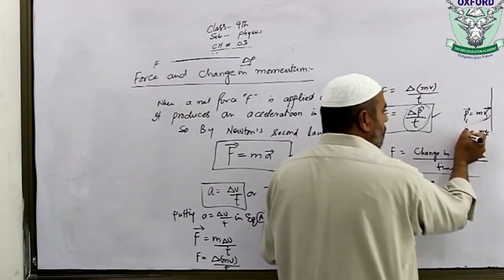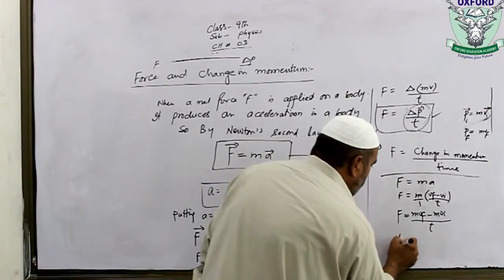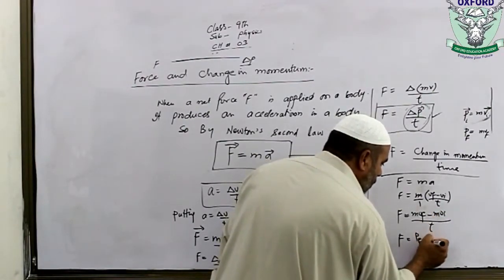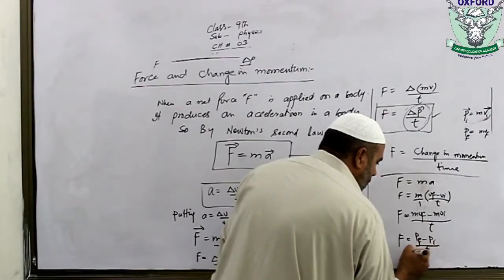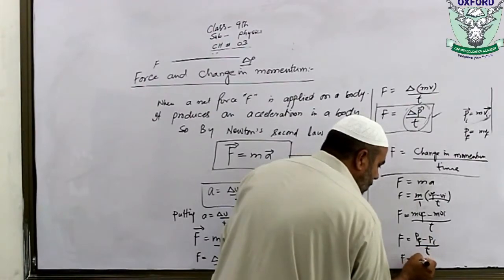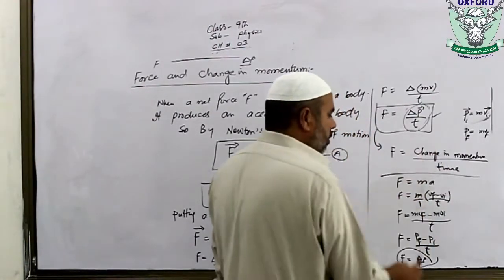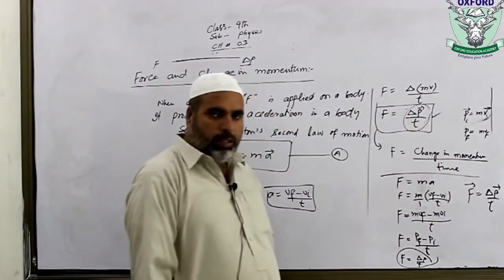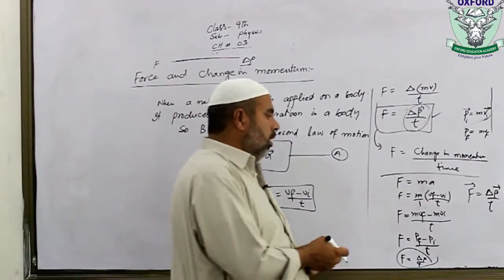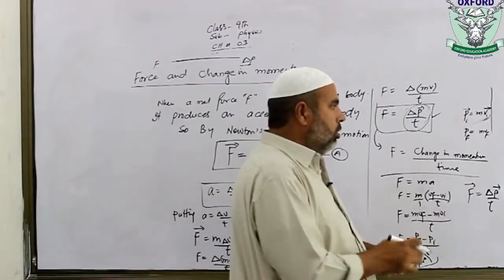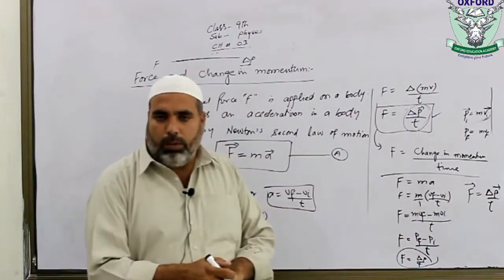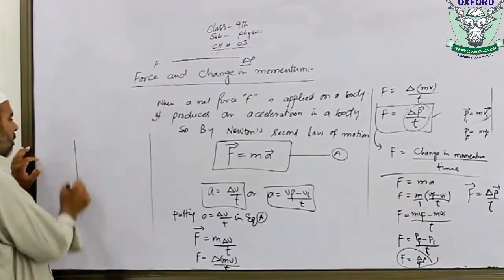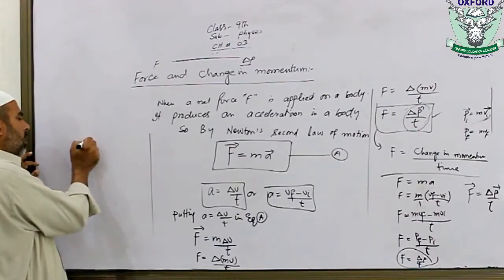The rate of change of momentum is called force. The final momentum is M times Vf, and the initial momentum is M times Vi. A student notes that momentum changes when force is applied, and the force changes accordingly.